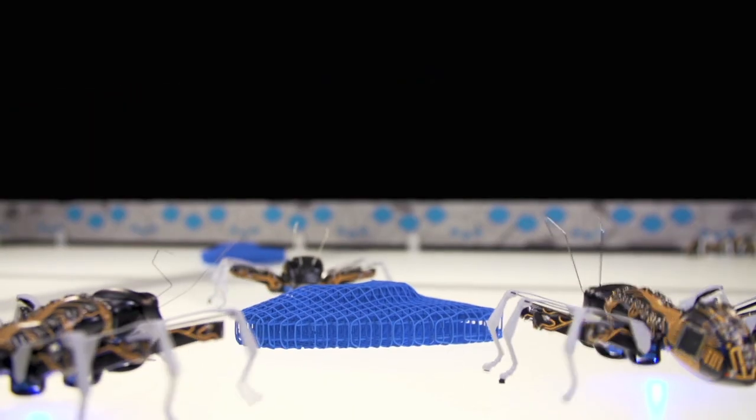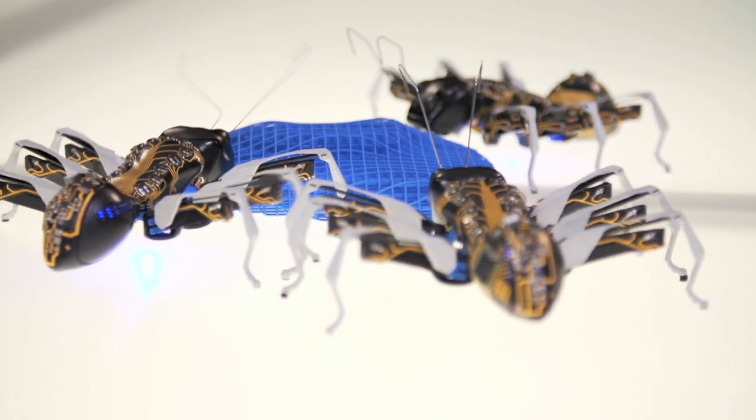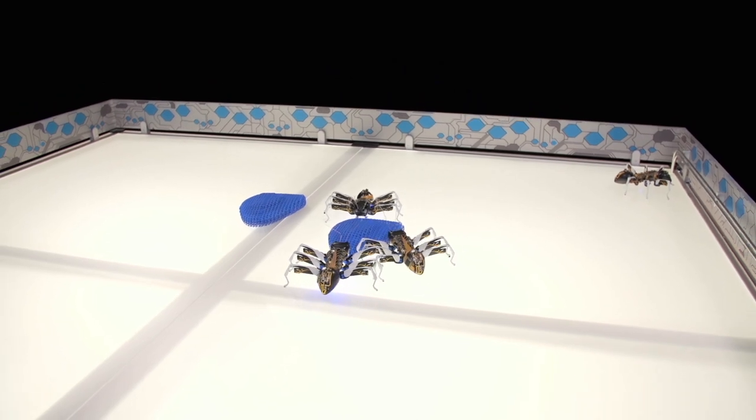Next, three bionic ants approach a similar form. They latch on and work together to move it across the pen. One ant watches the other two.